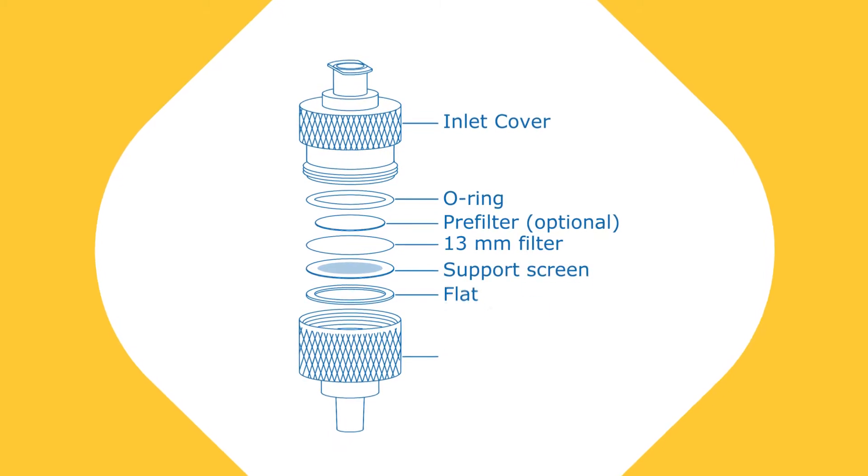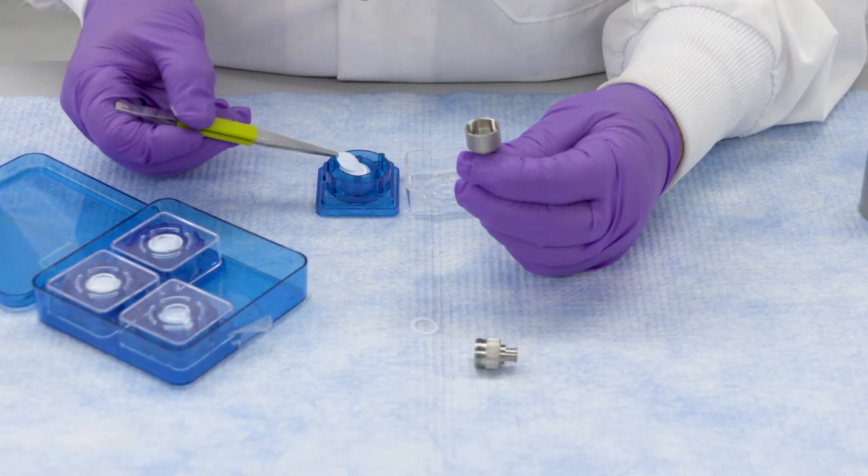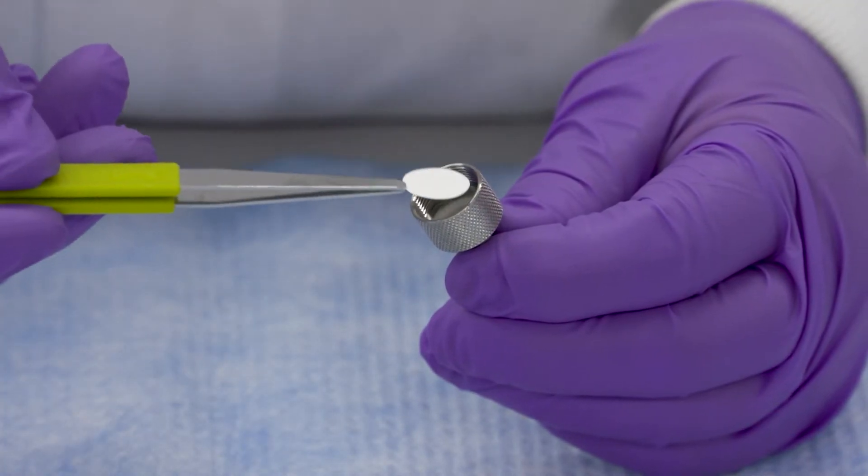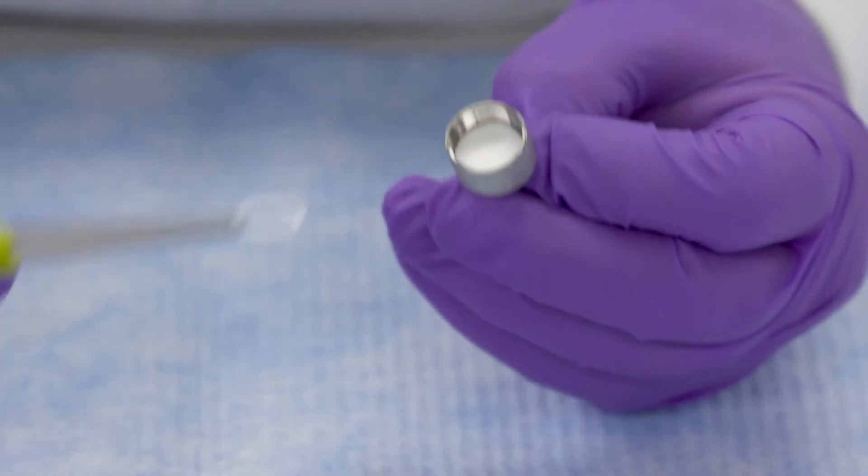Place the flat gasket into the base and place the support screen on top of it. Using smooth tip forceps, place a 13mm diameter filter on the support screen, then place the O-ring on top of the filter.